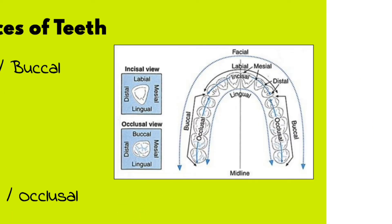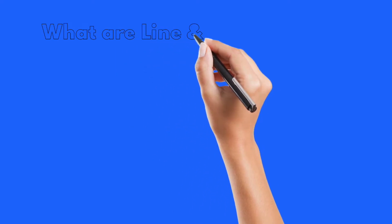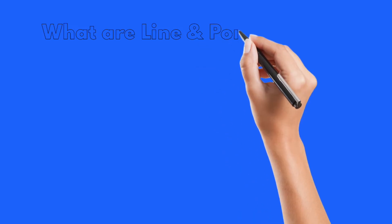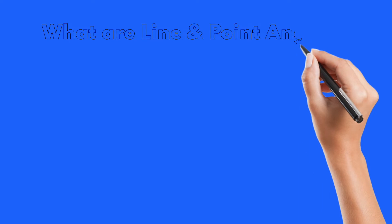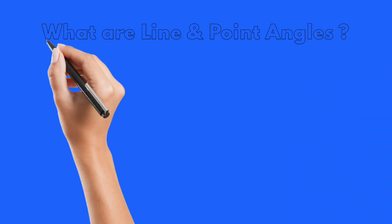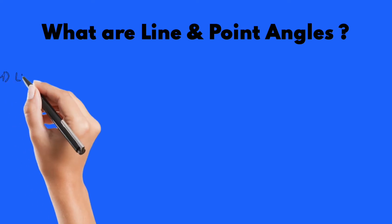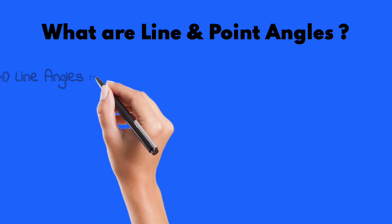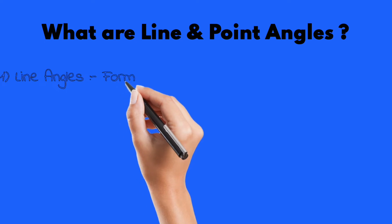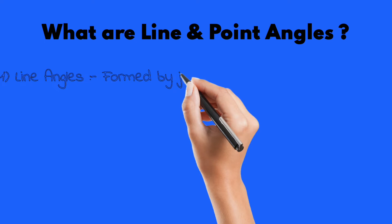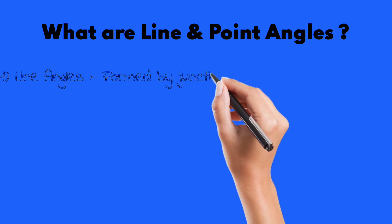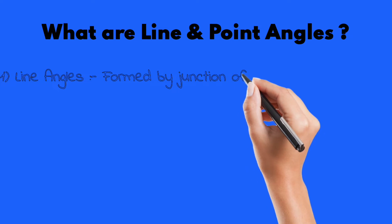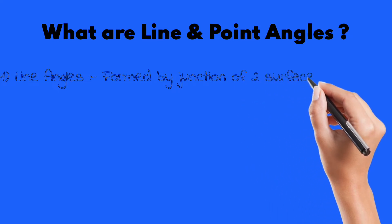Finally, we have the incisal and occlusal surface, which is the upper view of the tooth surface. Next is a very important topic frequently asked in exams and vivas: what are line angles and what are point angles? Line angles are formed by the junction of two surfaces of the tooth. They are named based on the labial, buccal, lingual, mesial, distal, incisal, and occlusal surfaces, giving us six line angles.